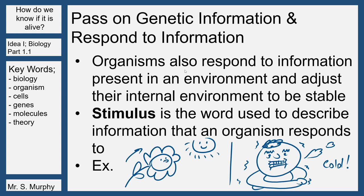Organisms also have to respond to information present in an environment and adjust their internal environment to be stable. Stimulus is the word we use to describe information that an organism is responding to. Plants will grow towards the sun — plants do not have a nervous system like we do, yet they're still somehow responding to the stimulus that is sunlight. Same as us: if we're cold, you're going to start shivering. Your body senses that it's cold, and you respond to the environment by shivering to generate more heat energy by utilizing your chemical energy.